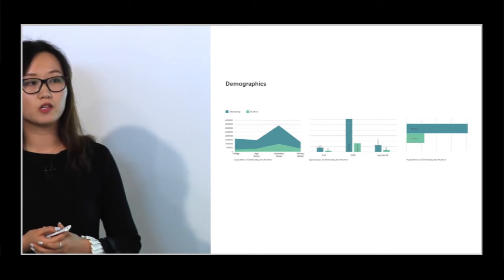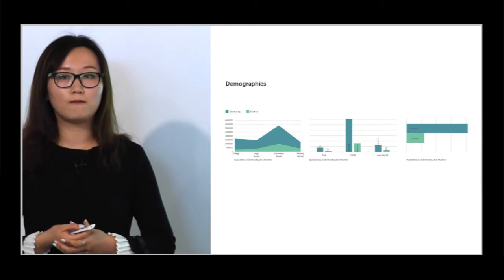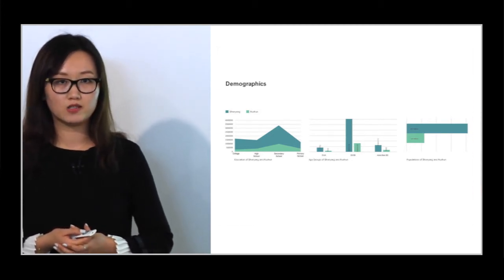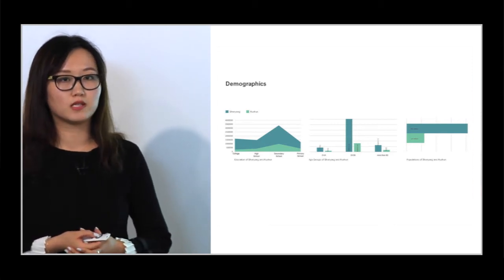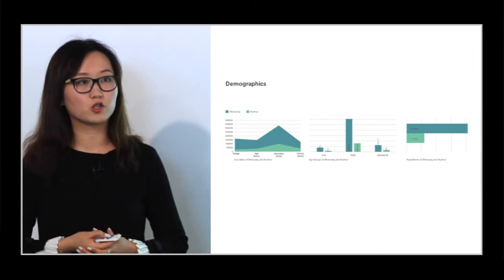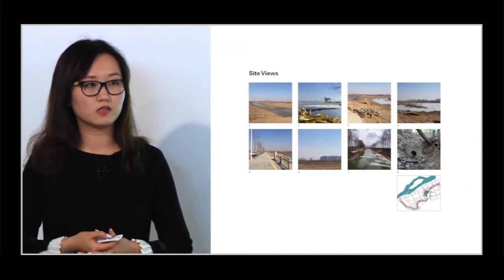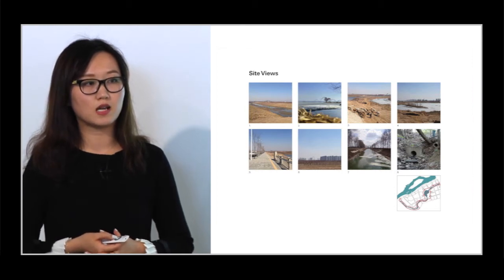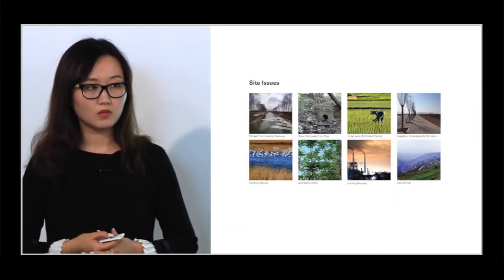From the demographic chart, you can see the education background of the region is not very good — the main education level is secondary school. So in my project, I will provide education programs so people can improve their awareness of sustainability and learn about the river treatment process. These site views show that people can see the skyline of the industrial city and some landmarks from within the site.